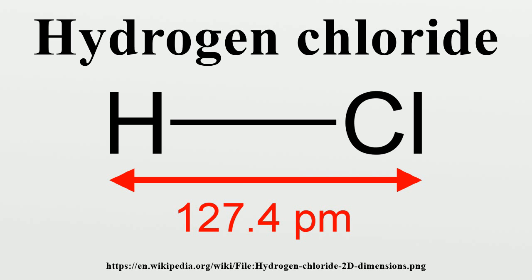During the Industrial Revolution, demand for alkaline substances such as soda ash increased, and Nicolas LeBlanc developed a new industrial-scale process for producing soda ash. In the LeBlanc process, salt was converted to soda ash using sulfuric acid, limestone, and coal, giving hydrogen chloride as a by-product. Initially this gas was vented to air, but the Alkali Act of 1863 prohibited such release. Soda ash producers then absorbed the hydrogen chloride waste gas in water, producing hydrochloric acid on an industrial scale.